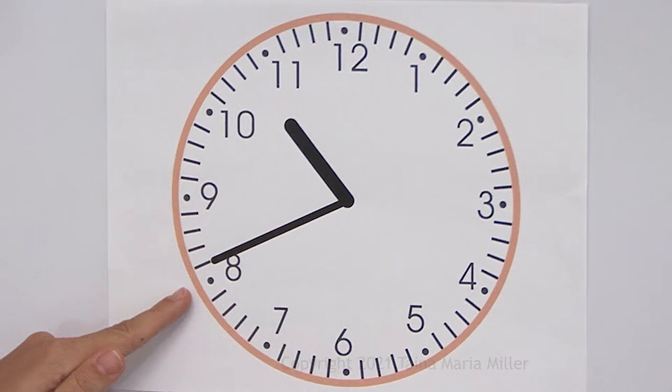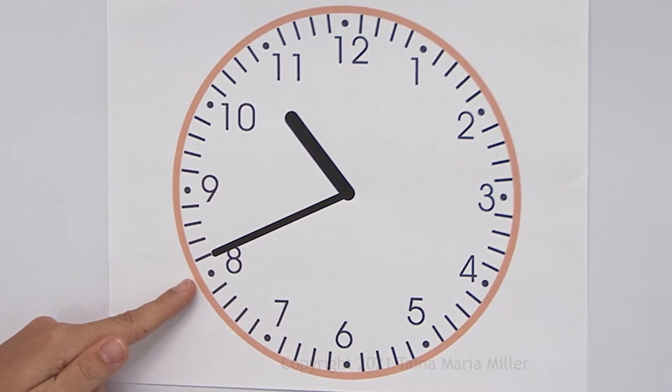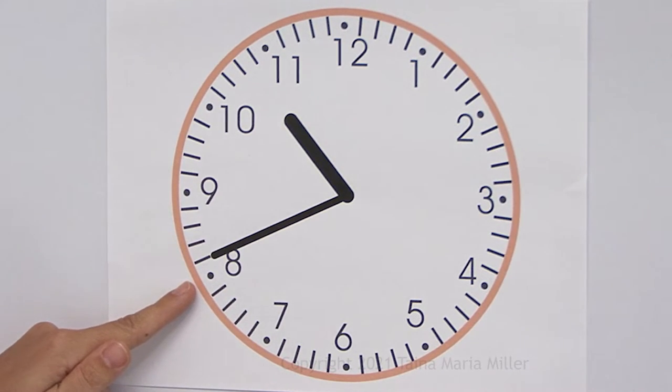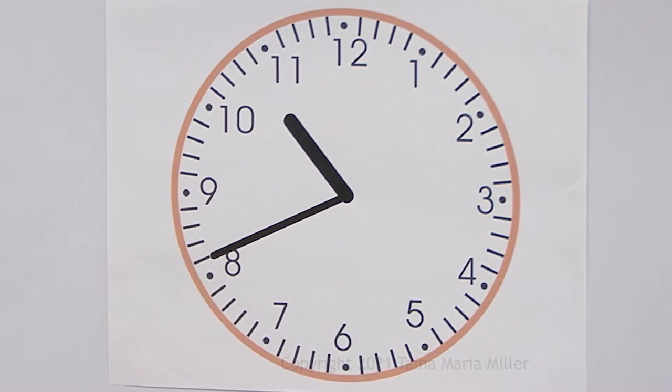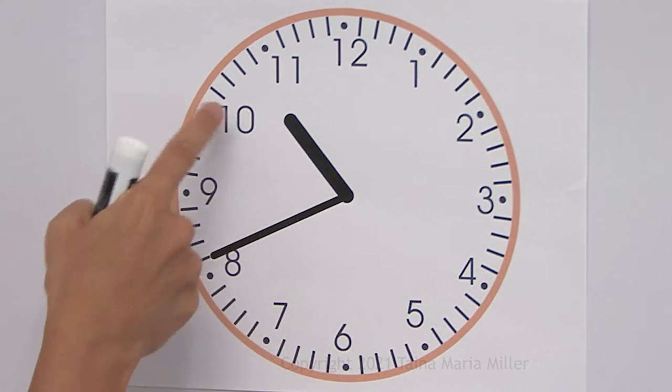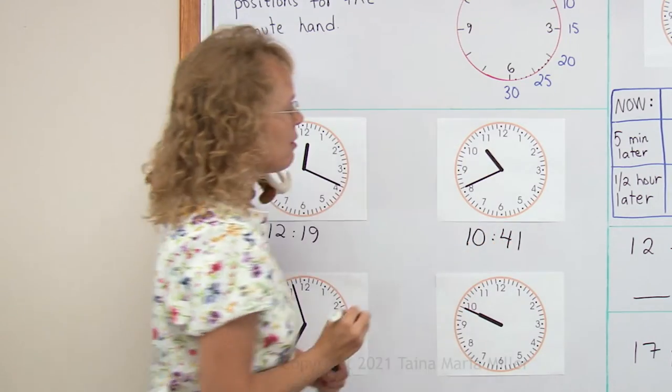Now how about this one? If the minute hand was pointing here, it would be 40 minutes, right? Here's 30, 35, 40. And so it's one line past that. It's 41 minutes and then 10 hours. 10:41.